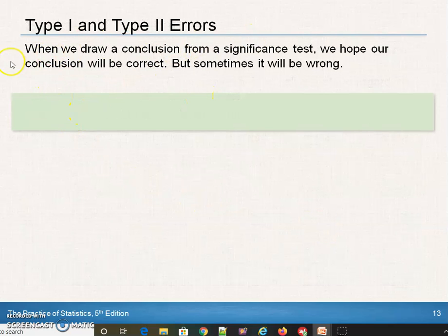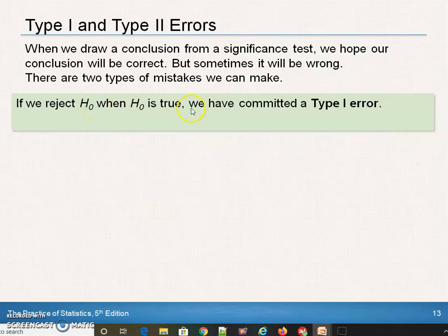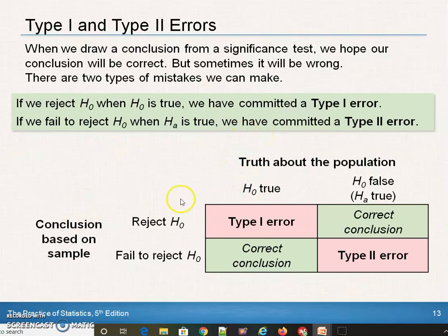You might make a mistake — type one and type two errors. When we draw a conclusion from a significance test, we hope it's right, but sometimes we make mistakes. If we reject the null hypothesis when it's true, that's a type one error. If we fail to reject the null hypothesis when the alternative is true — when the null hypothesis is false — we have committed a type two error. In the table: reject the null when it is true = type one error; reject when it is false = correct conclusion. Fail to reject when the null is true = correct; fail to reject when it is false = type two error.